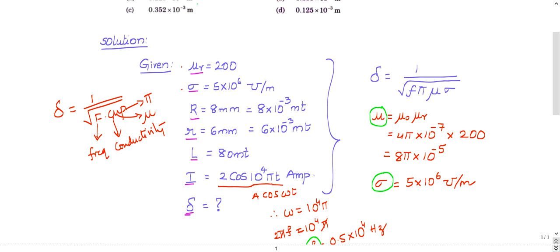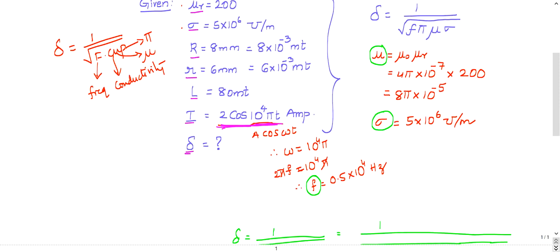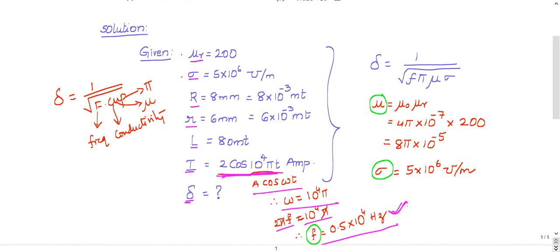Let us try to extract the information. First is F, frequency. Is there any frequency? Yes, you can get the frequency from this relation: I = 2cos(10^4π t). It is similar to Icos(ωt), so ω is 10^4×π, which equals 2πf. If you simplify, you will get frequency as 0.5×10^4.